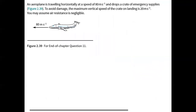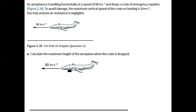Third problem: an airplane is traveling horizontally at a speed of 80 meters per second and drops a crate of emergency supplies. To avoid damage, the maximum vertical speed of the crate on landing is 20 meters per second. Air resistance is negligible. Initially the crate only has a horizontal velocity, but once it is dropped it will have a vertical component of velocity as well, tracing a projectile trajectory.